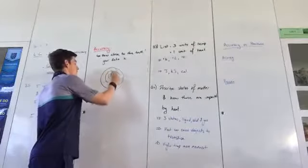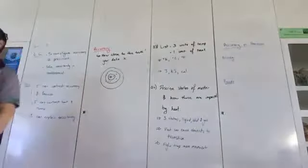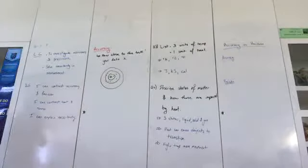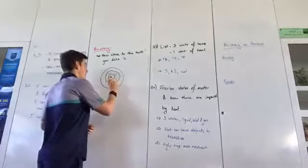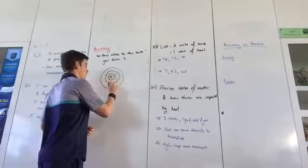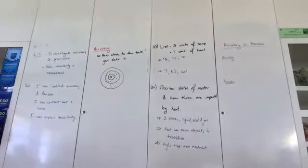So if your data looks something like this, you would say that is fairly accurate data. An example of non-accurate data would be something like this, because it's not aiming at the right thing.